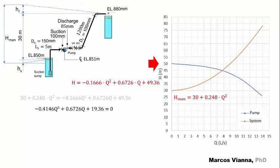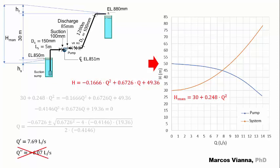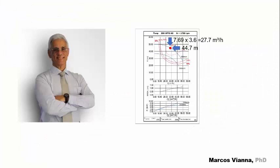Solving it, we find the values for Q. Of course, we ignore the negative one. We find the H value substituting the value of Q in one of the former expressions. Here's what we get when we bring the result to the pump chart.